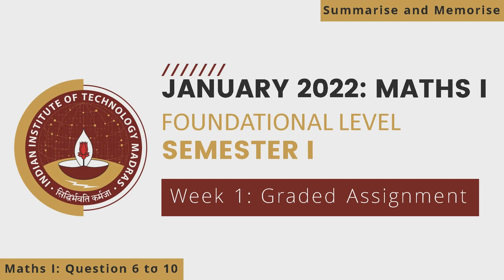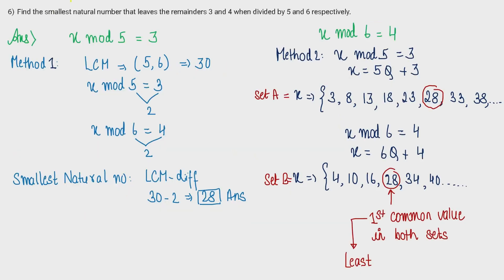Hello everyone, welcome to summarize and memorize. In this video we will be doing questions 6 to 10. Since they are integer type and on an easier side, I have included all the questions in one video. We need to find the smallest natural number that leaves remainder 3 when divided by 5 and 4 when divided by 6. When we have information about remainders, that means we are talking about mod. When I divide a number by 5, this gives me a remainder of 3, and that's why I have used this mod in between. Similarly, when I am dividing a number by 6, my remainder is coming out to be 4.